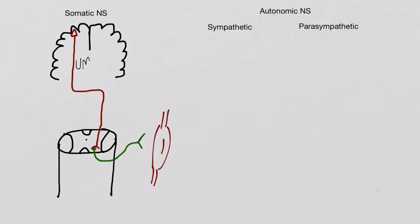In this example, the neuron that came from the cerebral cortex is considered an upper motor neuron. The neuron that came out from the ventral horn is considered a lower motor neuron. Decussation occurred at the medulla oblongata pyramids.